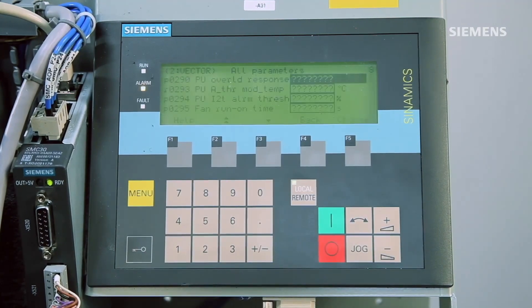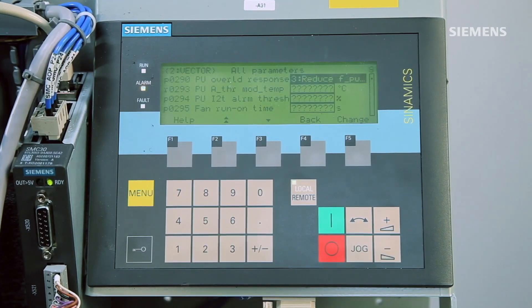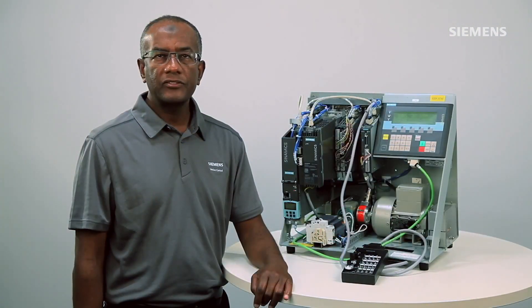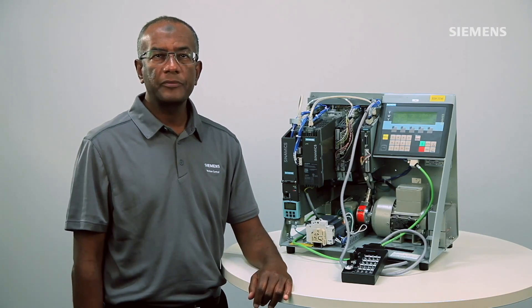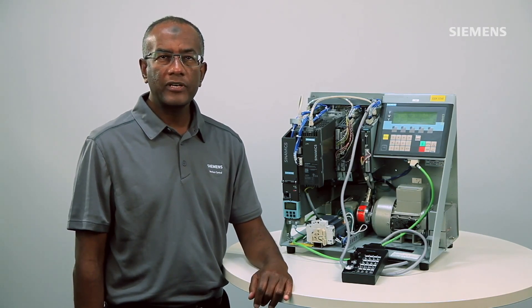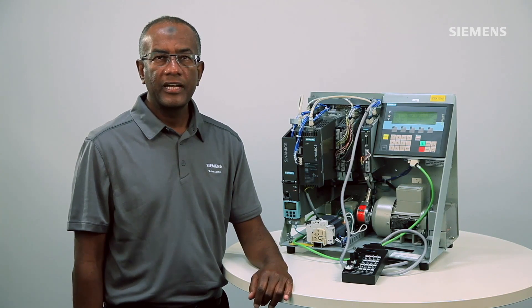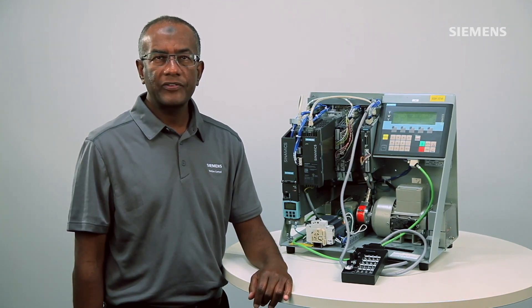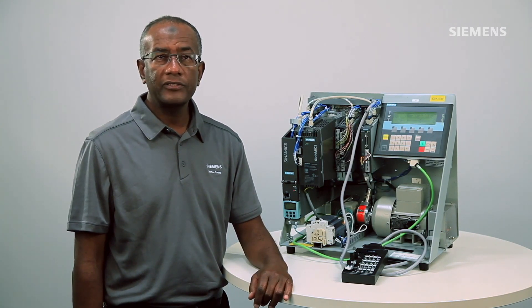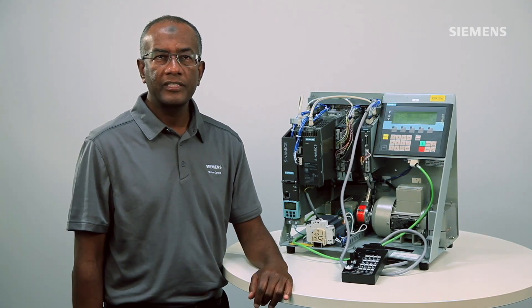Notice the display shows PU overload response. The power unit overload response or parameter 290 allows us to set the drive to respond with multiple preventive actions before an overload fault occurs. This parameter gives us different tactics to aid in avoiding the fault entirely and thus it maintains consistent uptime.